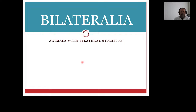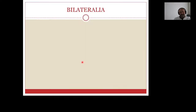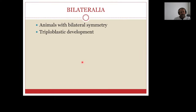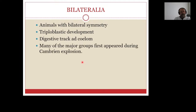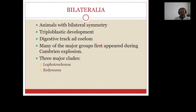Bilateria — our next group of animals are bilateraleans, animals with bilateral symmetry. These are triploblastic animals. They have a digestive tract and coelom. Many of the major groups first appeared during the Cambrian explosion, and there are three major clades: Lophotrochozoa, Ecdysozoa, and Deuterostomia.